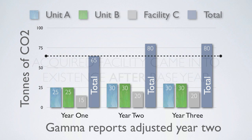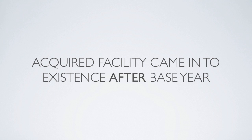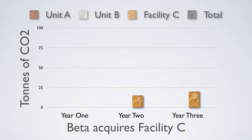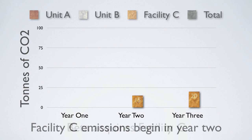The next example is very similar to the previous one, but there is one major difference: the acquired facility came into existence after the base year was set. In this example, Company Beta consists of two business units, A and B, with the same emissions as in the previous example. The base year was set in year one. At the beginning of year three, Beta acquired production facility C from another company. Production facility C came into existence in year two, with emissions of 15 tons in year two and 20 tons in year three.